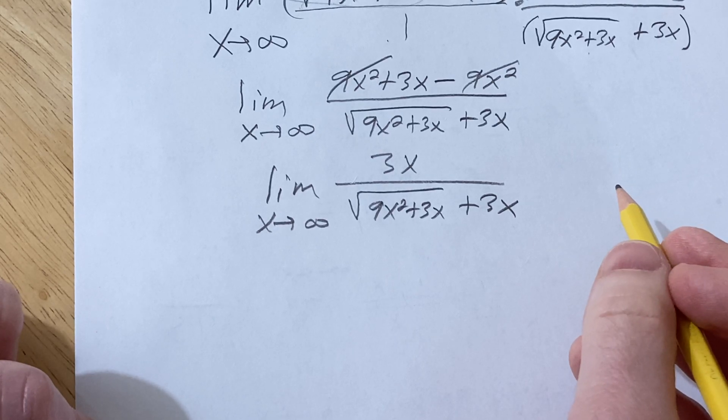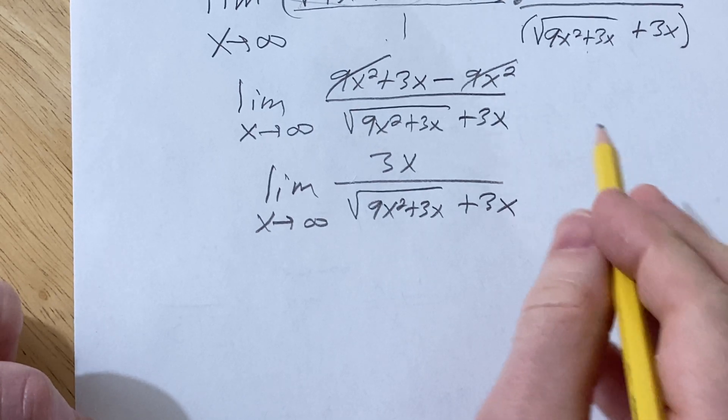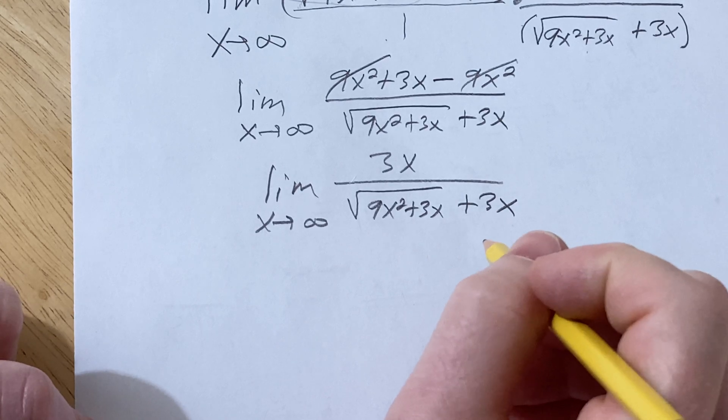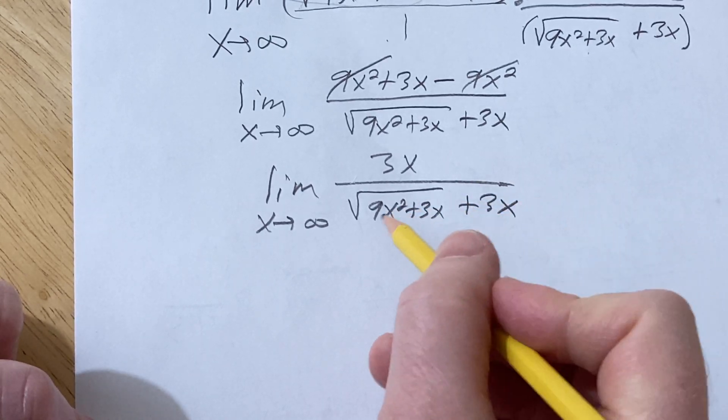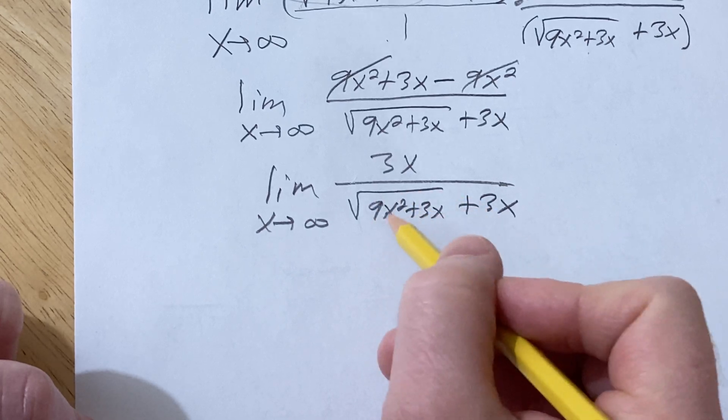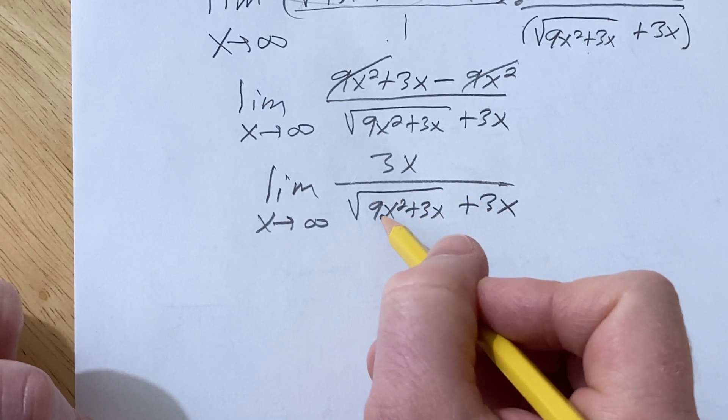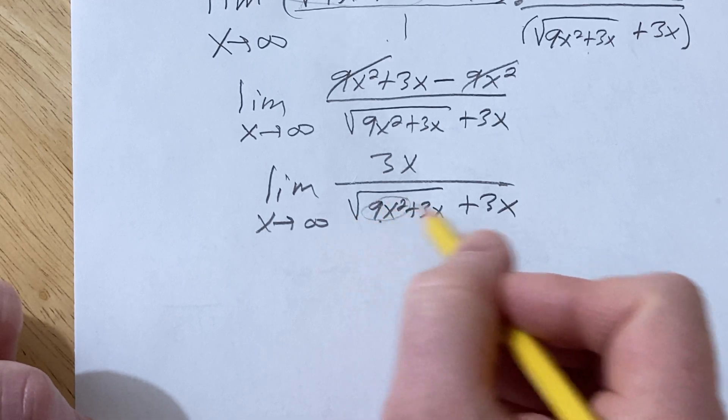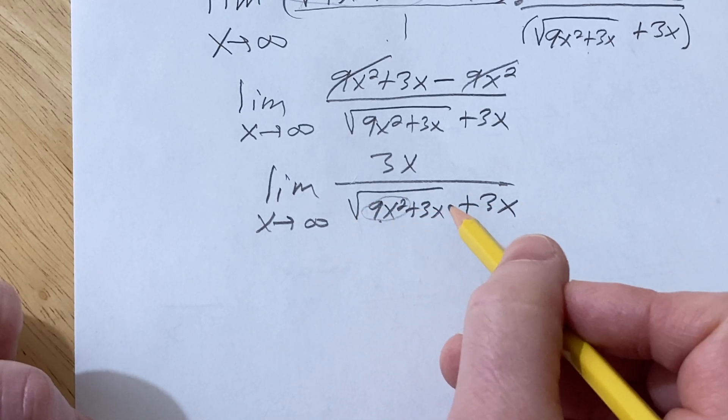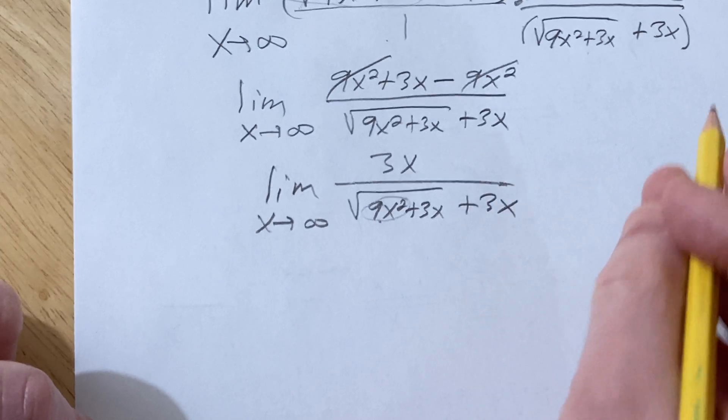Okay, so now what we're going to do is we're going to clean this up. So to clean this up, we basically need to try to think about what's happening down here. So it would be really nice to get rid of this 9x squared so we can make sense of this problem.